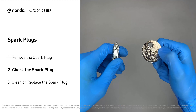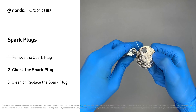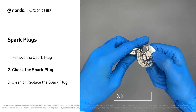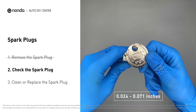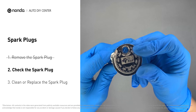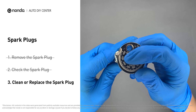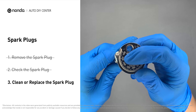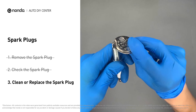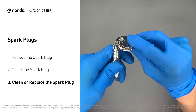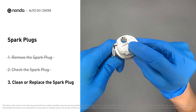Use a spark plug gapper to check the spacing of this spark plug. Normally the spacing should be between 0.024 to 0.071 inches. As you can see, the spacing of this spark plug is a bit low. Use the spark plug gapper to increase the spacing back to the normal range.